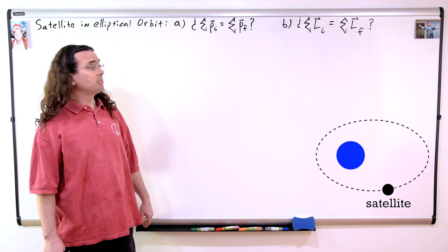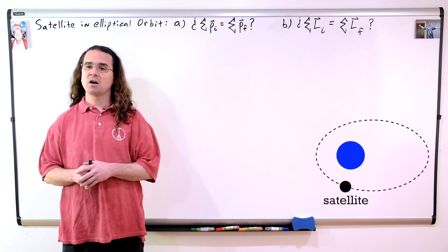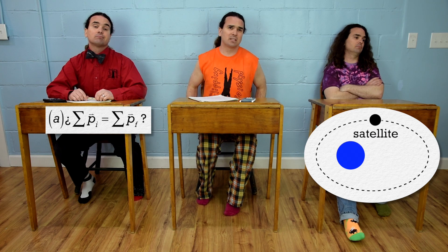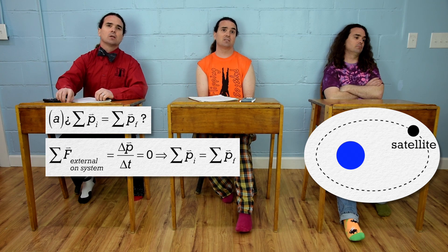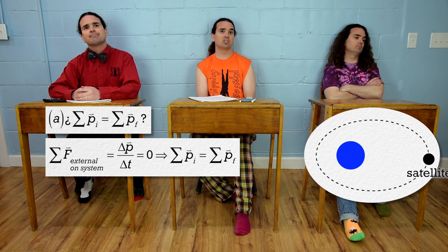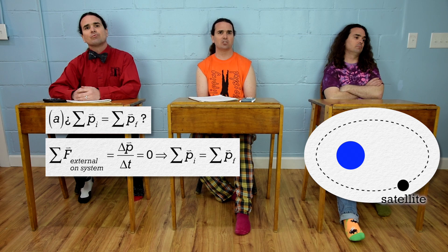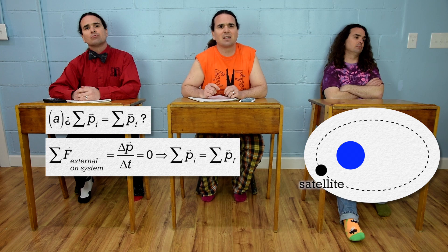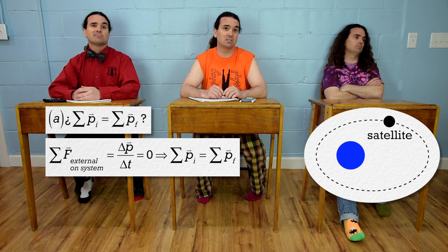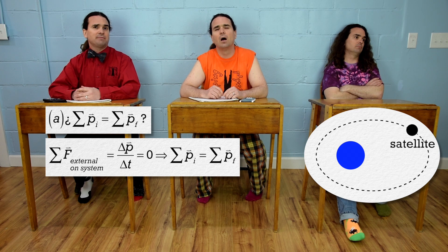All right, this seems pretty straightforward. Bobby, please begin solving the problem. We know linear momentum is conserved when the net external force acting on the system equals zero, because then the change in linear momentum over change in time equals zero, which means the linear momentum of the system is not changing. So we need to determine if the net external force acting on the system equals zero, and the system in this case would be just the satellite. Draw a free body diagram of the forces acting on the satellite.